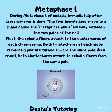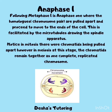After prophase 1, metaphase 1 begins. During metaphase 1, the four homologues move to a plane called the metaphase plate, halfway between the two poles of the cell. The spindle fibers attach to the centromeres of each chromosome. Both kinetochores of each sister chromatid pair turn towards the same pole, so both kinetochores attach to spindle fibers from the same pole. Following metaphase 1 is anaphase 1, where the homologous chromosome pairs are pulled apart and move to the ends of the cell, facilitated by microtubules. Notice that in mitosis, chromatids are pulled apart; however, in meiosis at this stage, the chromatids remain together as one complete replicated chromosome.